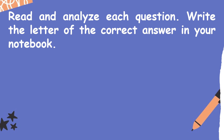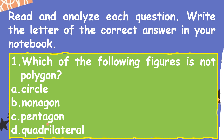Read and analyze each question. Write the letter of the correct answer in your notebook. For number one: which of the following figures is not a polygon? A. Circle, B. Nonagon, C. Pentagon, D. Quadrilateral. Which one is not a polygon? The answer is circle.